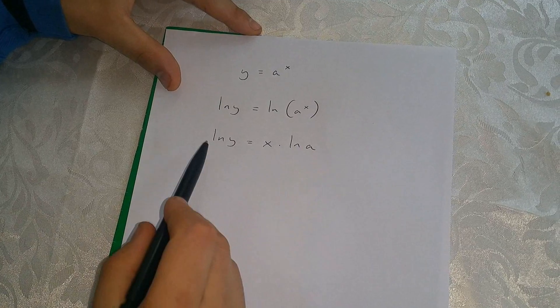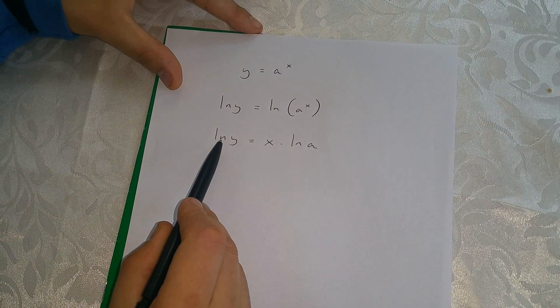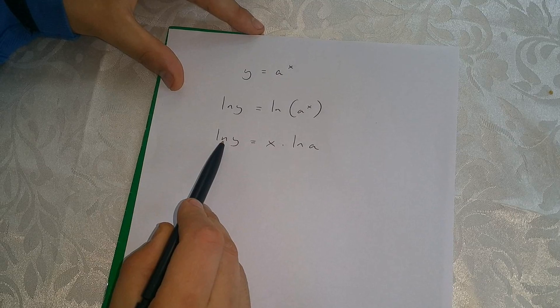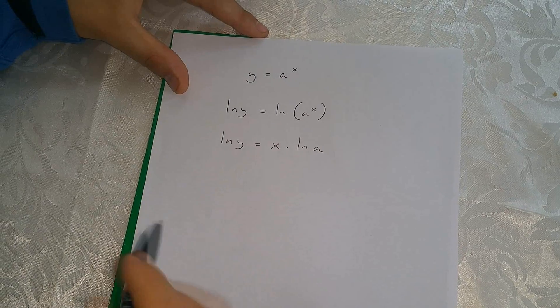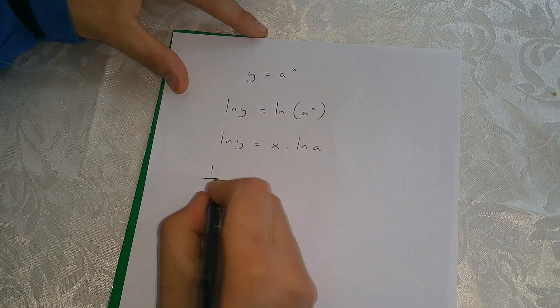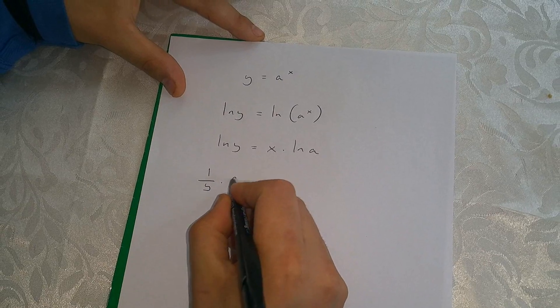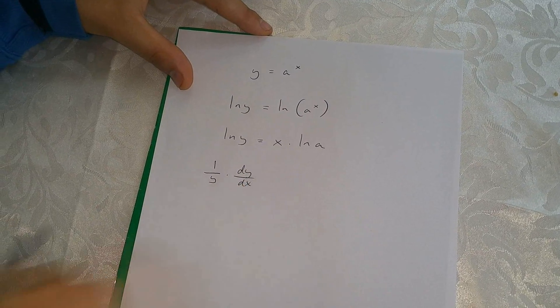Now we're going to use implicit differentiation on this side of this equation. So we end up with 1 over y times dy over dx over here.